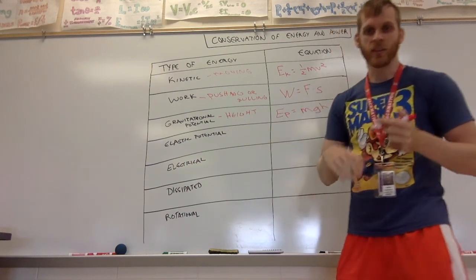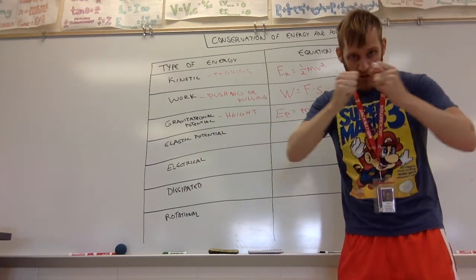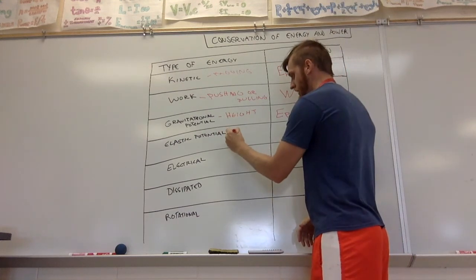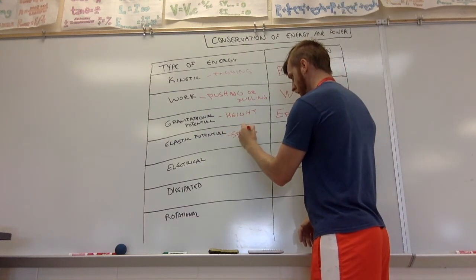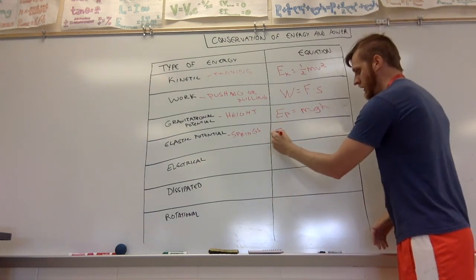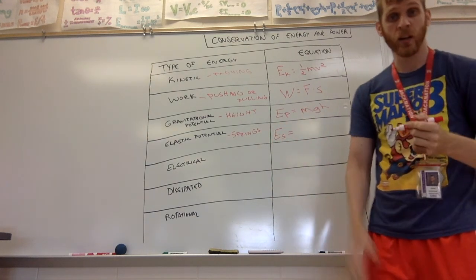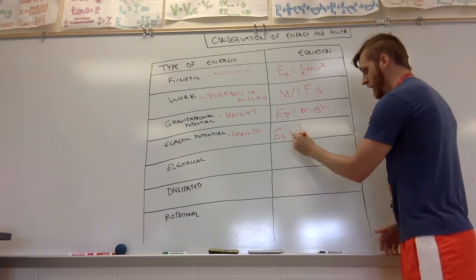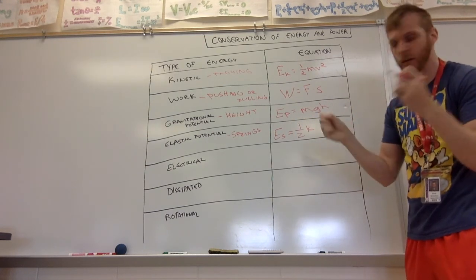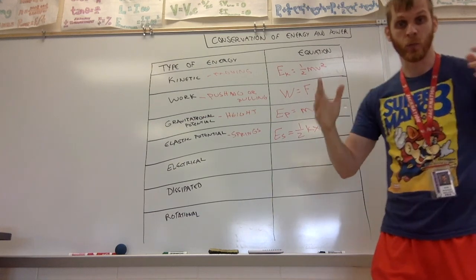Elastic potential energy deals with springs and bungee cords. If you stretch something, it wants to spring back — so there's energy stored in springs. The equation is often written as E_s (energy of spring) equals one half k x squared, where k is the elastic constant (how strong the spring is) and x is the distance from equilibrium.